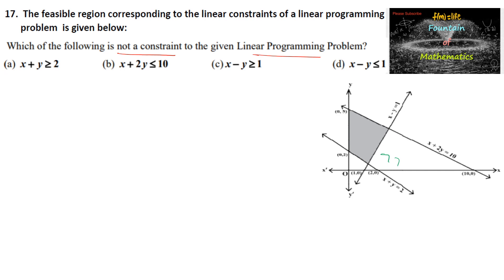The first line equation is x + y = 2. By substituting the origin: 0 + 0 = 0. The inequality is away from the origin, meaning 0 does not satisfy it, so x + y ≥ 2. The solution inequality is x + y ≥ 2, which is the first option — it is a constraint of the given LPP.